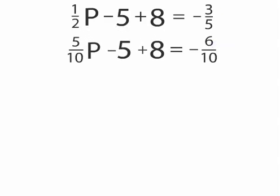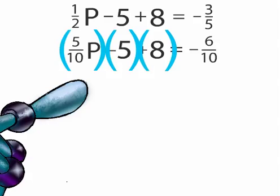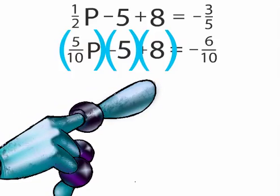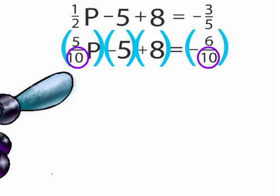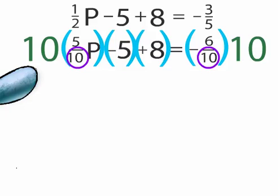Before we go any further, let's put parentheses around each of our terms. We have 3 terms on one side and one term on the other side. Since we have a common denominator of 10, let's get rid of our fractions by multiplying each term by a numerator of 10.